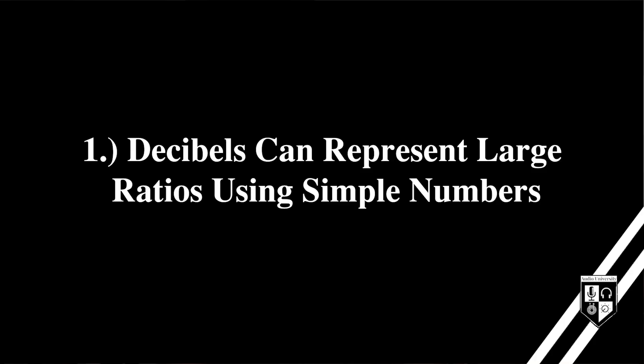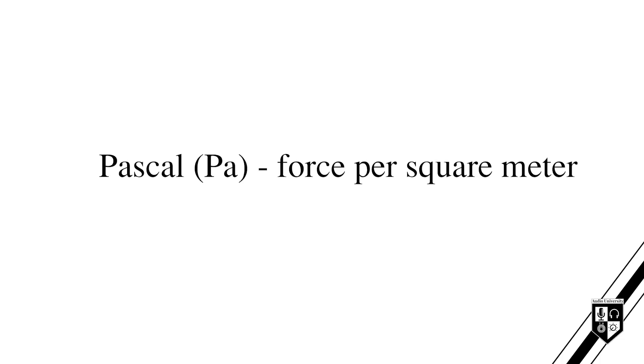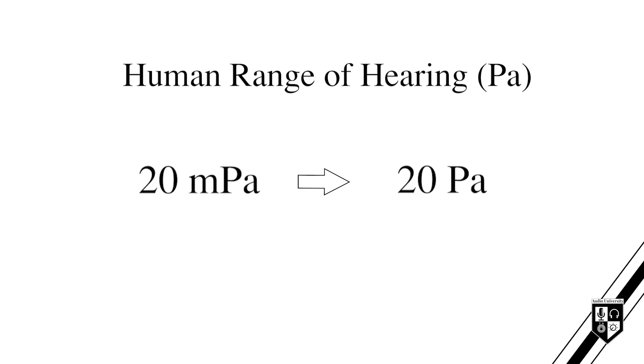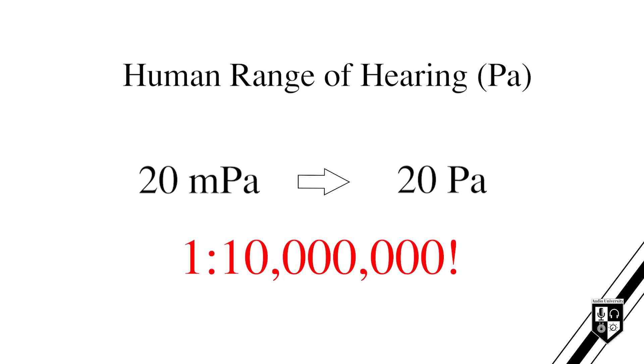The first thing you should know is that decibels can represent large ratios using simple numbers. That's one reason the decibel is so useful for describing sound pressure. Humans are capable of perceiving a vast range of sound pressure, from very subtle to very extreme. Discussing sound pressure in absolute units can be challenging. The Pascal is an absolute unit of measurement that describes air pressure in terms of force per square meter. The limits of human perception of sound pressure range from 20 micropascals to 20 pascals — a ratio of 1 to 10 million.